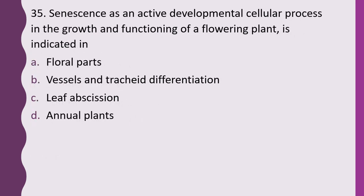Question 35. Senescence as an active developmental cellular process in the growth and functioning of a flowering plant is indicated in: floral parts, vessels and tracheids differentiation, leaf abscission, or anvil plants. The correct answer is option C — leaf abscission shows senescence as an active developmental cellular process.